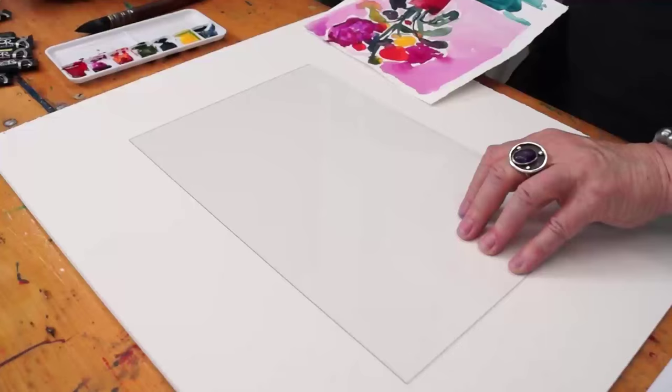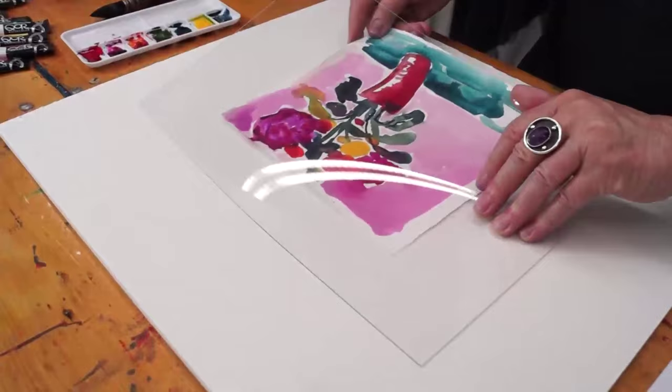One of the things I like about the monoprinting plates is that they are transparent. So you can use your original watercolor underneath for a reference or a photograph or a printed image or just paint from life.